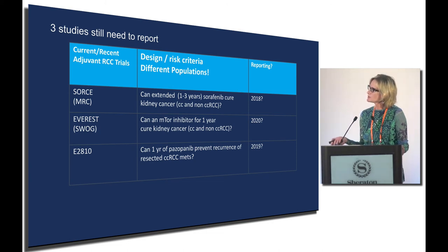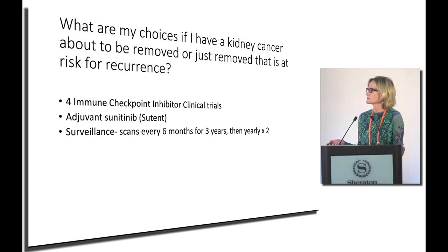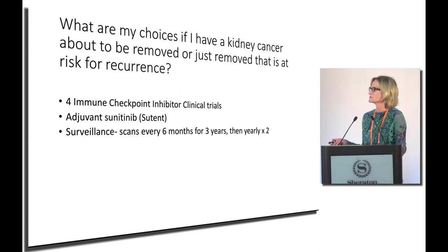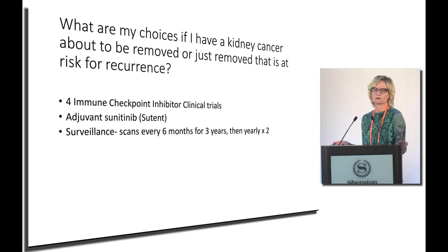So what are your choices if you have a kidney cancer about to be removed or just removed that's at risk for recurrence? There are four immune checkpoint inhibitor trials, there's adjuvant Sutent, and importantly, surveillance is still a very good option for many people. We usually recommend imaging every six months for the first three years, then yearly for two years, then stop imaging but continue follow-up with your primary care doctor or oncologist to look for symptoms.